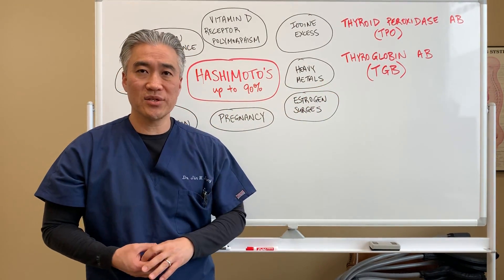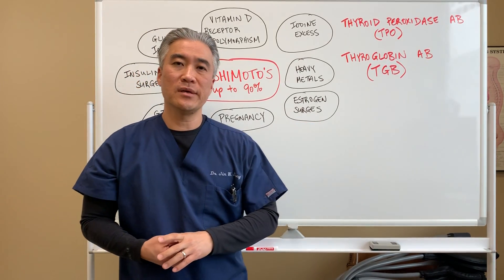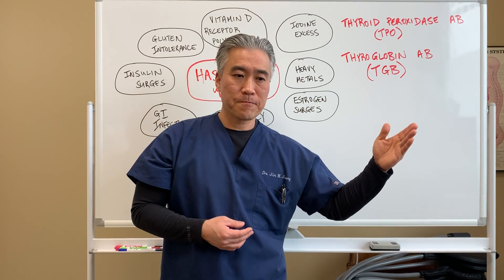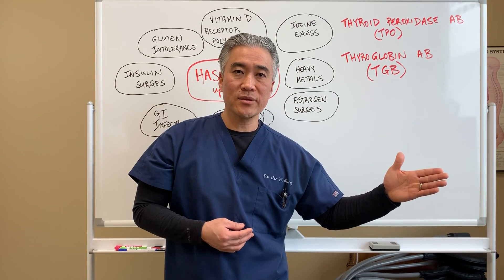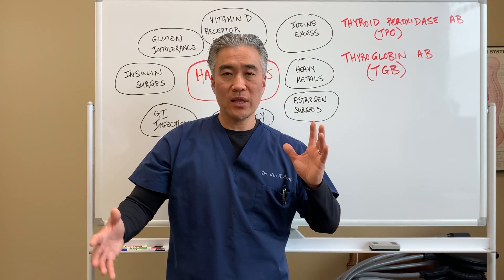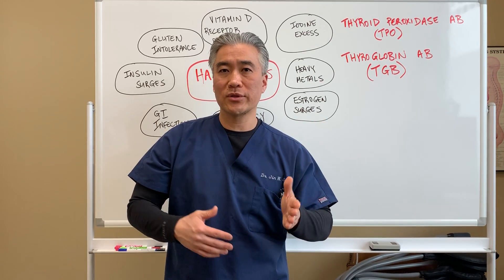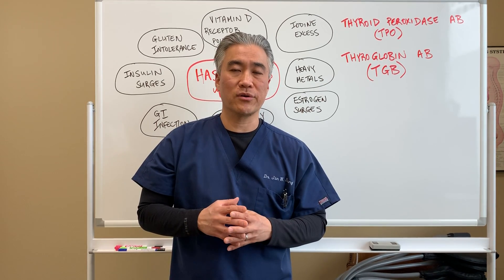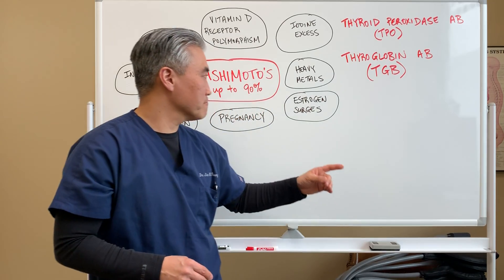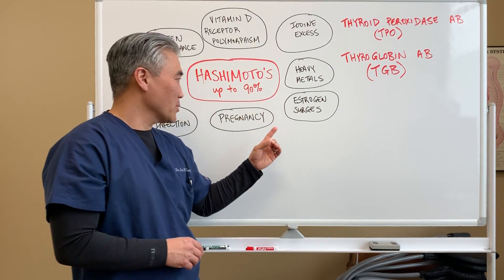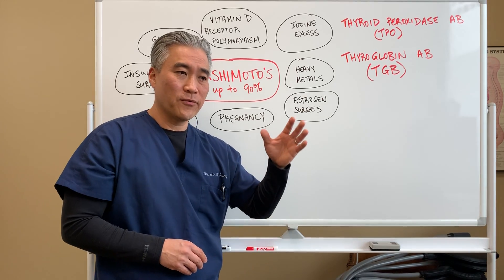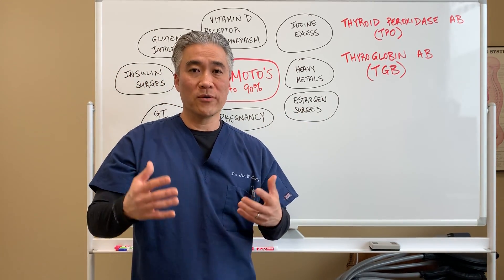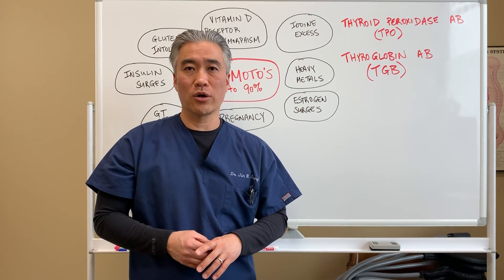Another trigger is heavy metal toxicity. Another is estrogen surges — for example, when going from pre-pubescent to puberty, developing menstrual cycles around 13 to 15 years old can create a trigger for Hashimoto's thyroiditis. Also, around perimenopause, when women go from menstruating to non-menstruating, it can create different types of hormonal fluctuations and trigger an autoimmune process.